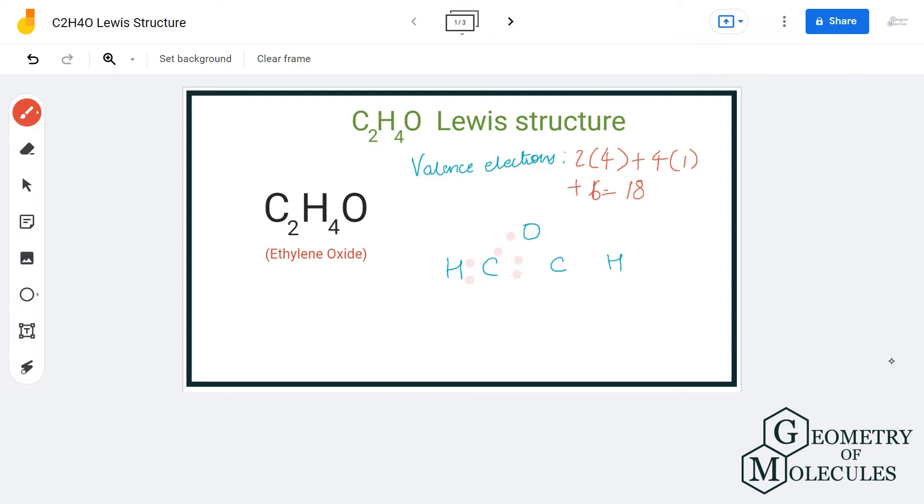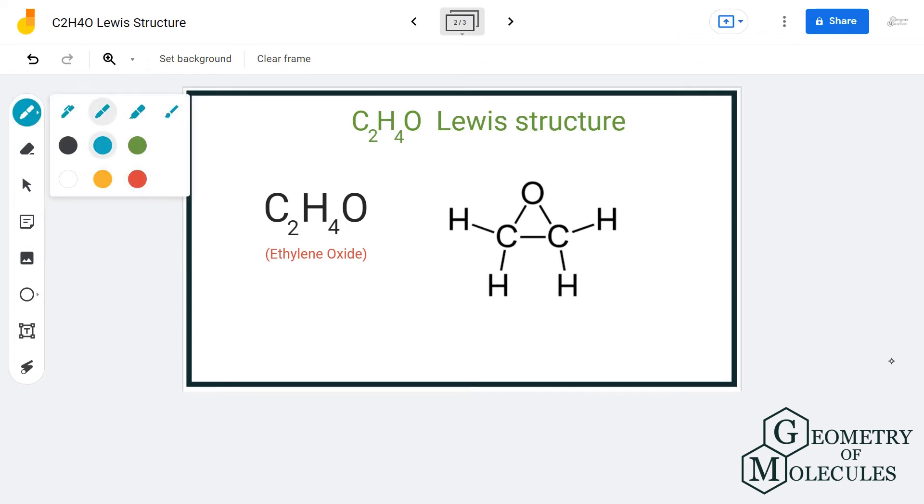You can have a look at this structure over here. It is written as CH2 O CH2. This is also one way that you can remember how to draw this structure. If you count the number of electrons, all the electrons are used up here.